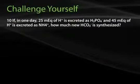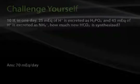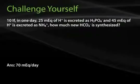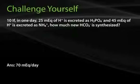Question 10: If in one day 25 mEq of hydrogen is excreted as hydrogen diphosphate and 45 mEq is excreted as ammonium, how much new bicarbonate is synthesized? The answer is 70 mEq for that day. New bicarbonate is synthesized any time there is hydrogen secretion. Both titratable acid and ammonium represent forms of hydrogen secretion, so 45 + 25 = 70 mEq of hydrogen are secreted, and therefore 70 mEq of bicarbonate is regenerated.